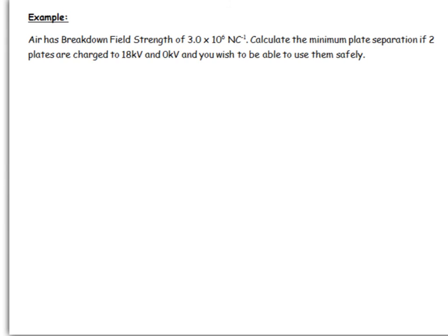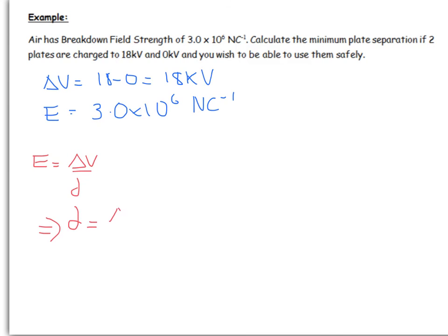If we think about this, delta V is going to be 18 minus 0 which is 18 kV, and you've got your E is 3.0 times 10 to the 6 newtons per coulomb. If we think about our equation, we've got E is delta V over d. So if we want to get what d is, we need to have delta V over E like this.